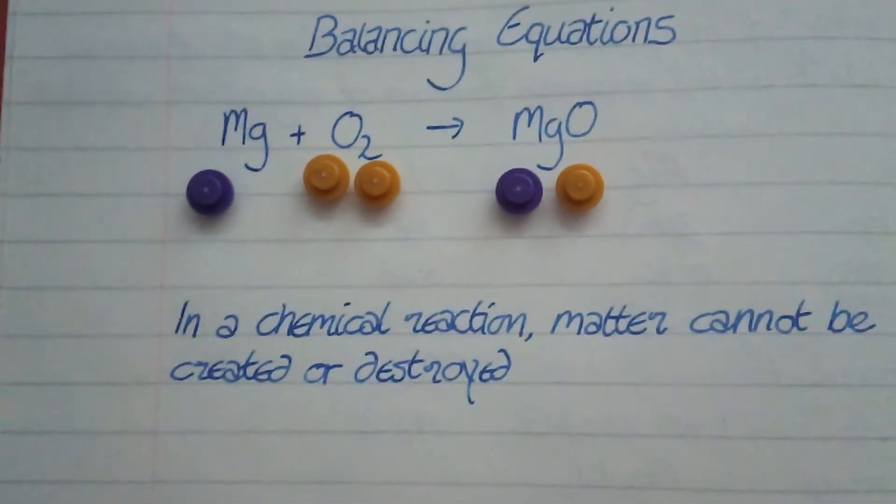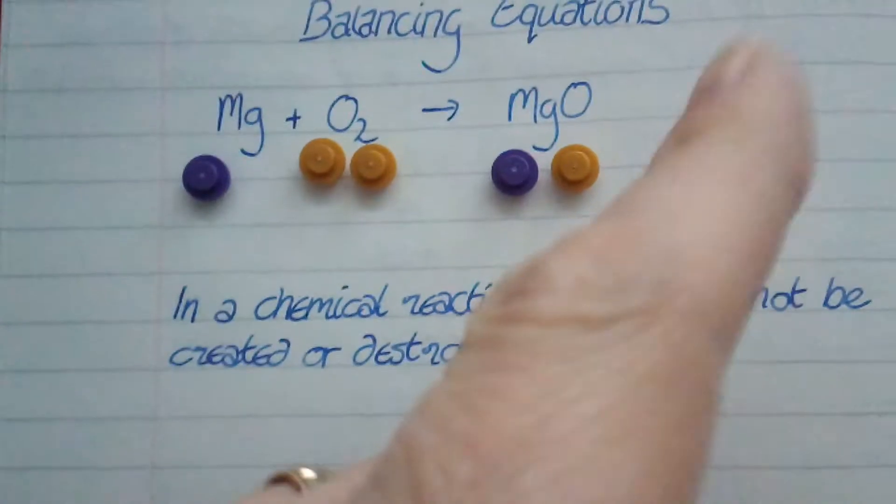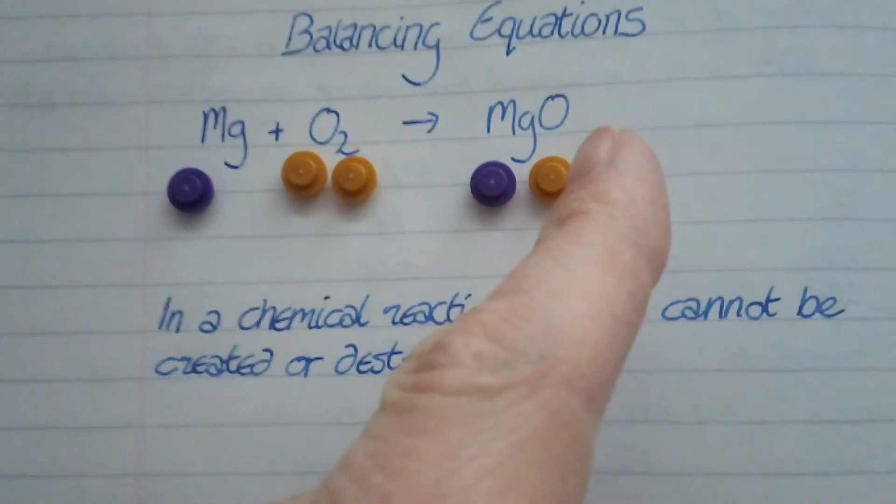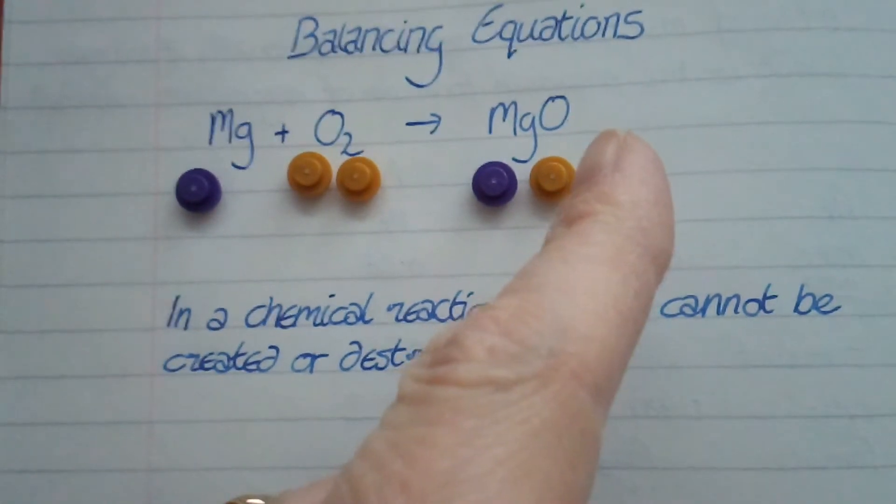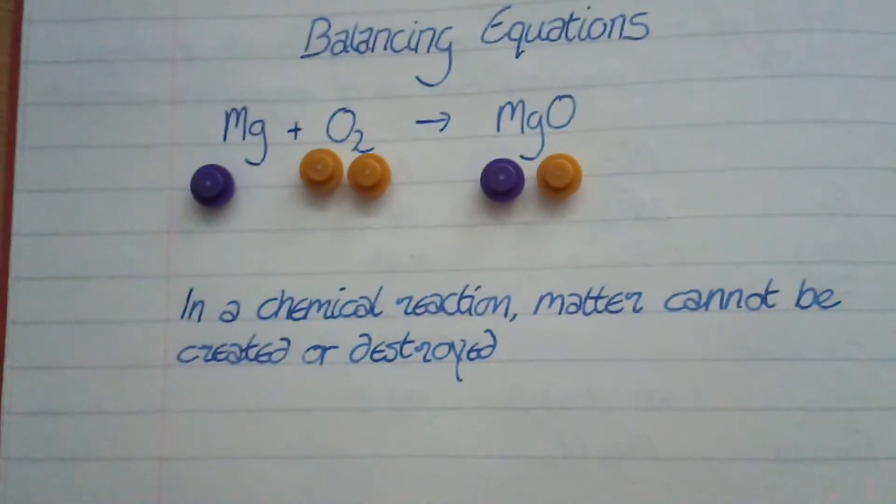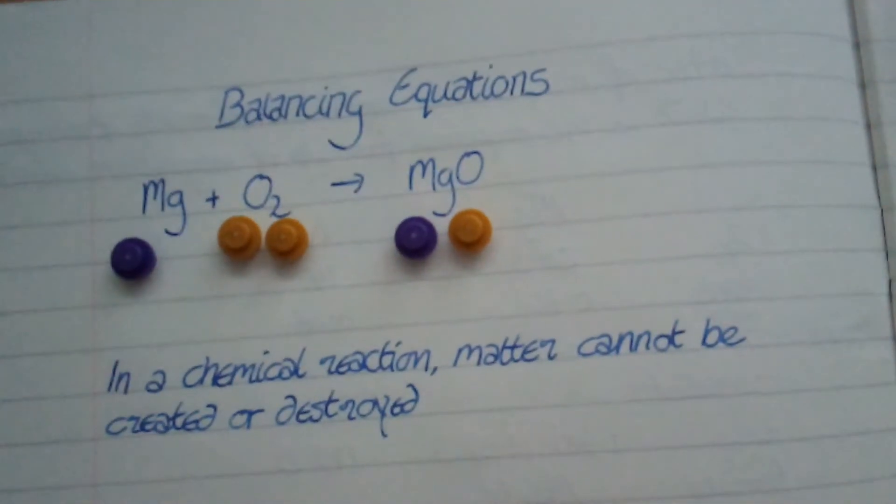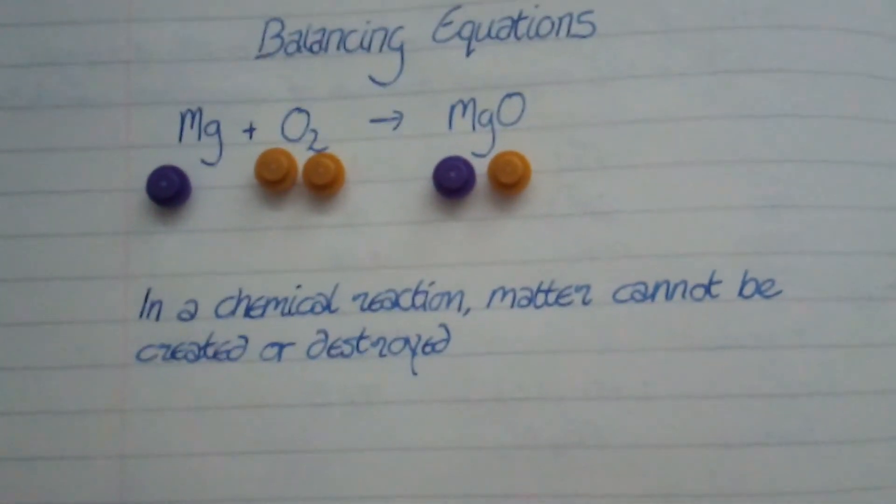So I can't change the formula. I can't add oxygen here. I can't write plus O2. No, no. I can't even write plus O. Definitely not. I can't add in a little number because it would be really tempting, wouldn't it, to just write a little number two here. Ha ha. No, I can't do that. That's not allowed.